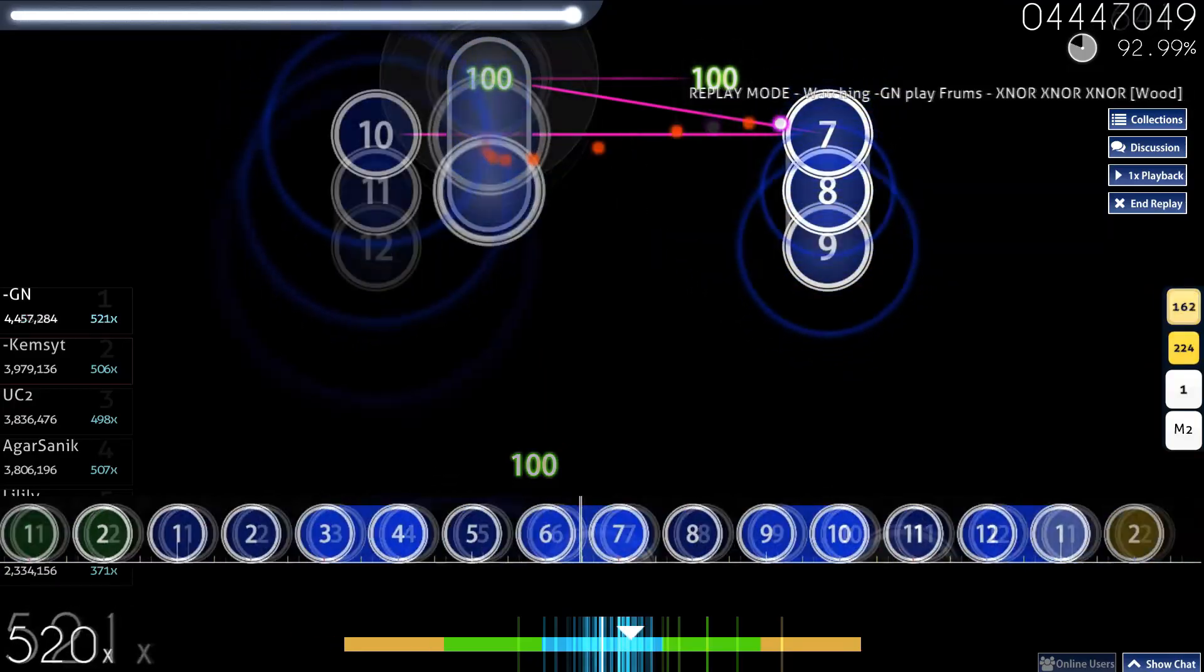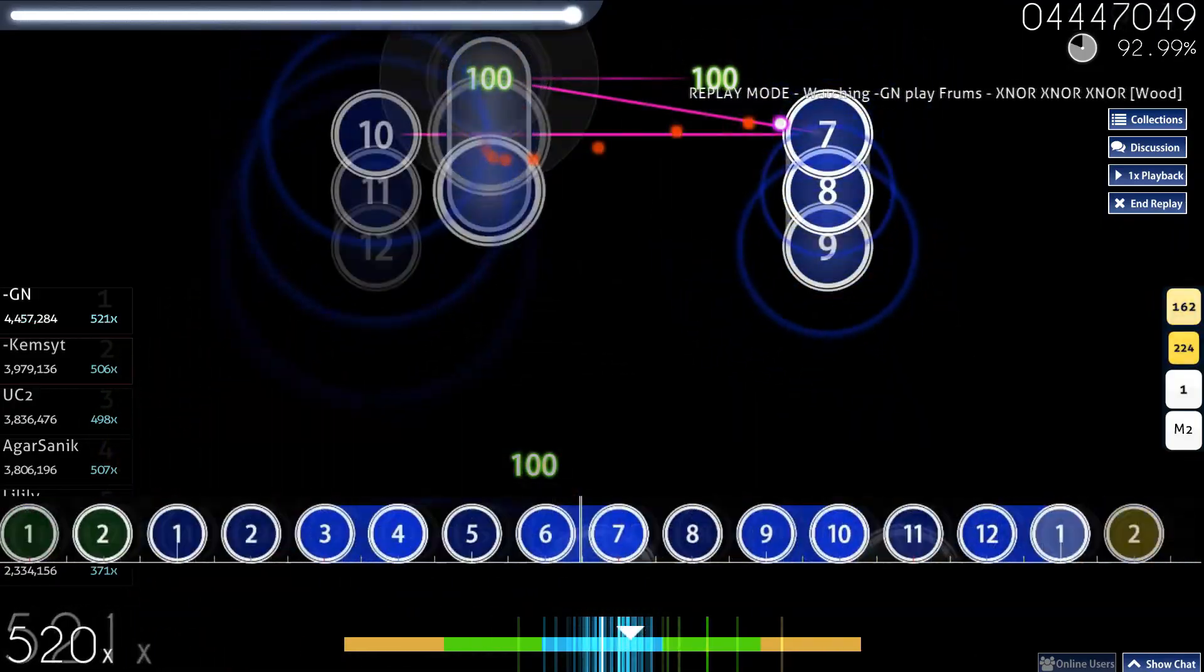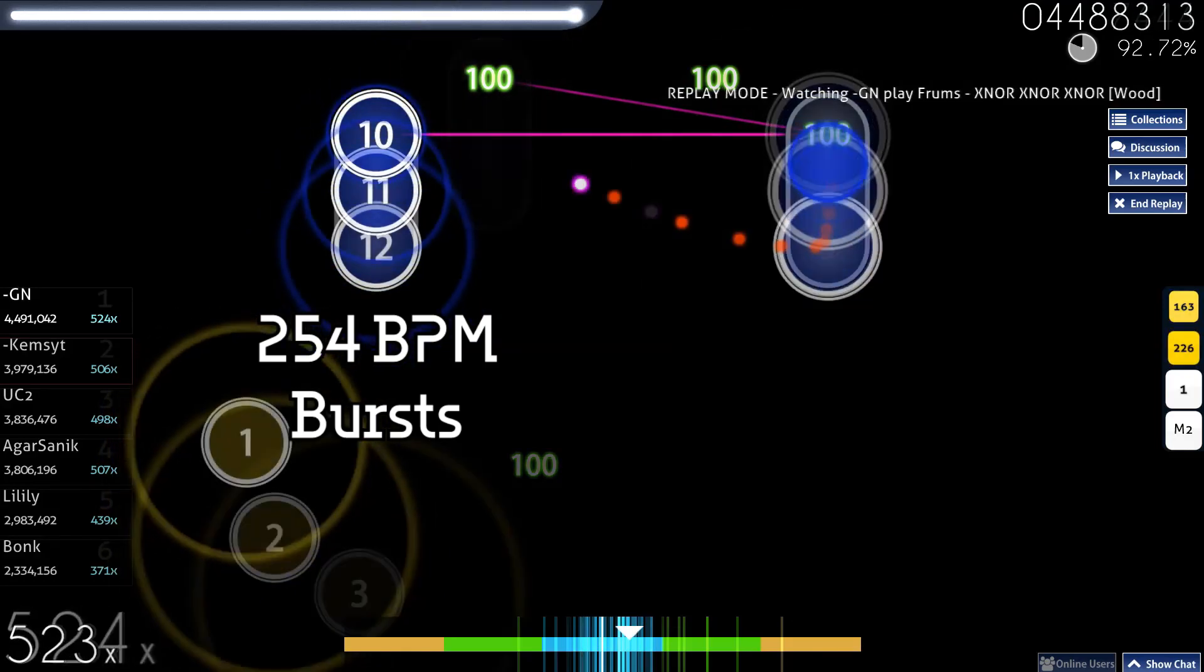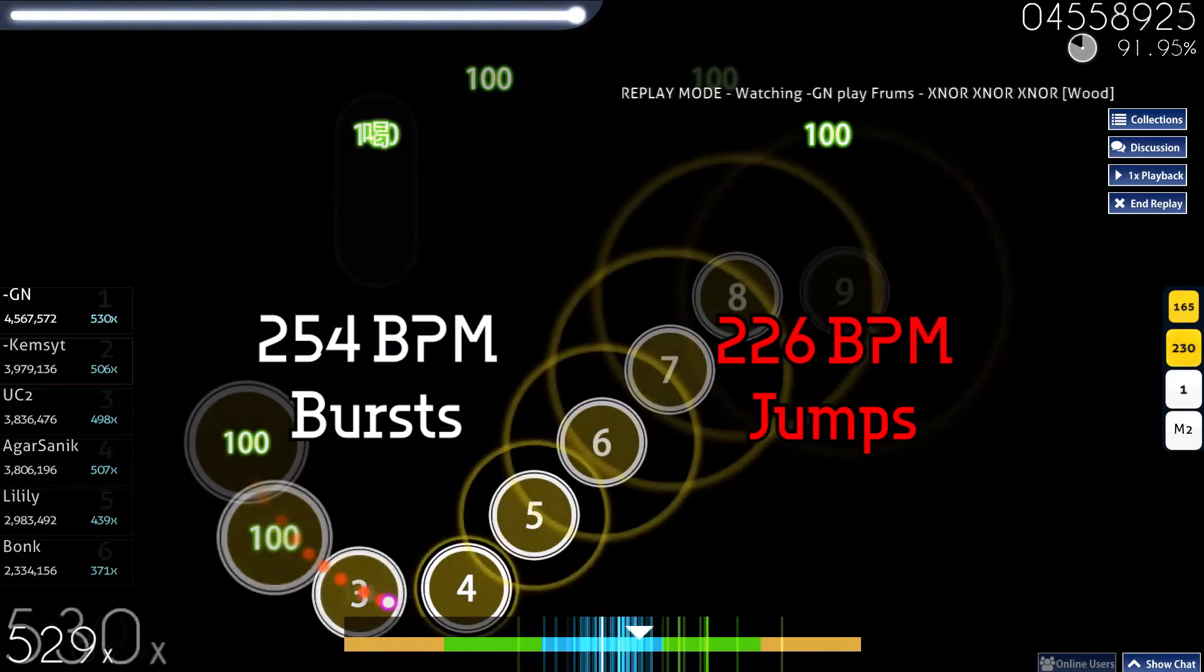The only thing I want to say about this part is that this pattern is very often misread as 4 triples, however this one is continuous cutstream. Either you can mash it, or try to hit it properly, or treat it as faster triples. If you would try to hit them as faster triples, having in mind that you would click on the first circle as late as possible and last as quickly as possible, you will end up with 254 BPM bursts paired with the jumps at around 226 BPM.